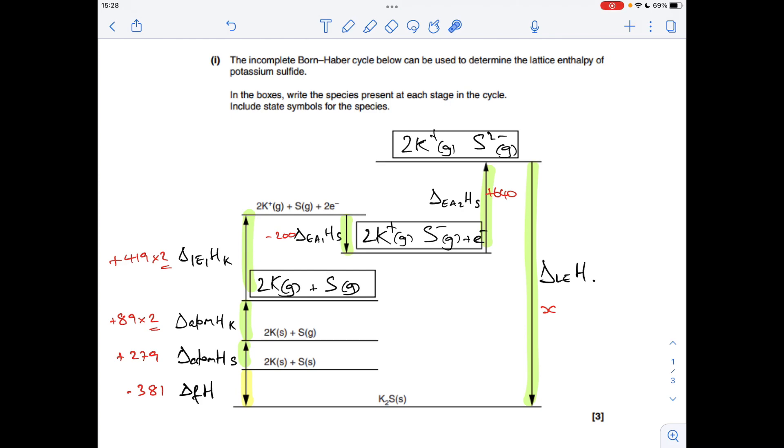So in terms of values, you've got to be careful with this one here because this is the atomisation of potassium. So we've got two moles of potassium involved in the cycle. So we have to double that one. We've also got two times the first ionisation energy. Again, we've got two moles of potassium being ionised. So I think that would be a common mistake nationally when this exam was done.